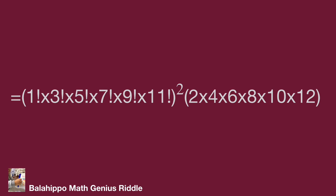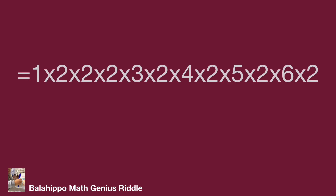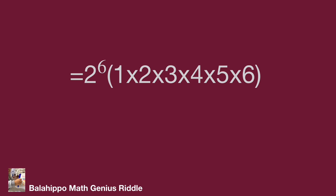Now try to generate another square from the second quantity 2 × 4 × 6 × 8 × 10 × 12. All of these items share a common factor of 2. So: 2 = 1×2, 4 = 2×2, 6 = 3×2, 8 = 4×2, 10 = 5×2, and 12 = 6×2. Altogether there are six factors of 2, giving 2⁶ times (1 × 2 × 3 × 4 × 5 × 6).